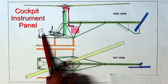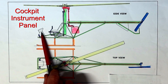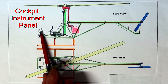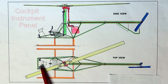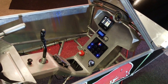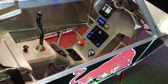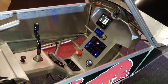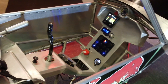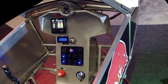Moving forward to the cockpit instrument panel. There are just very basic instruments installed for the early flight tests: the engine monitoring system, the main rotor RPM, fuel level gauge, and switches for the lights.